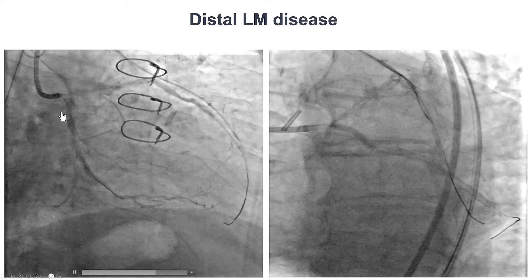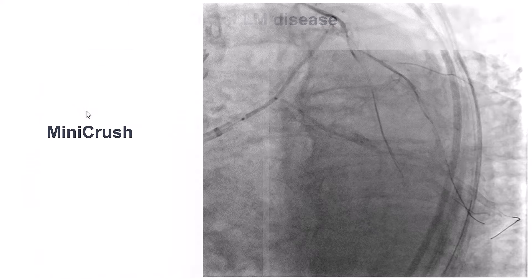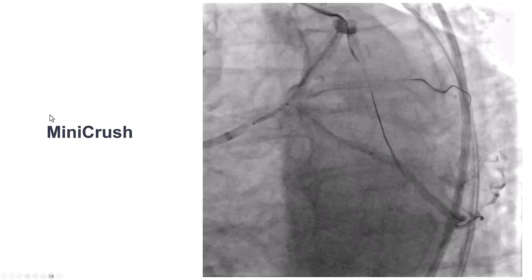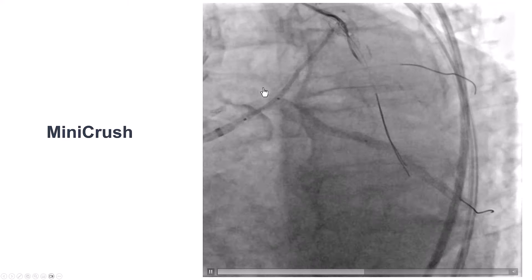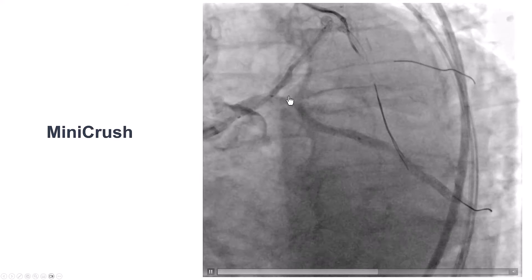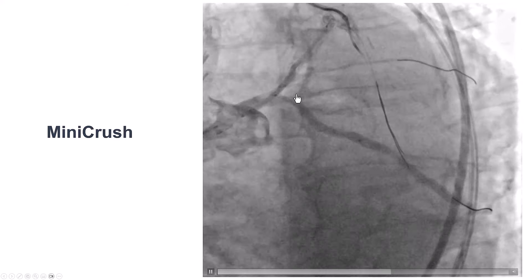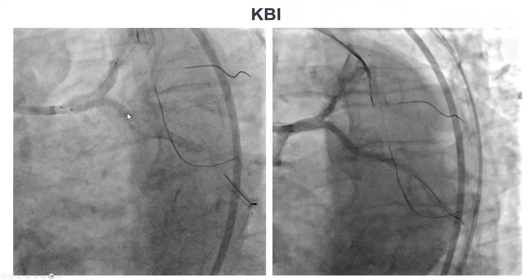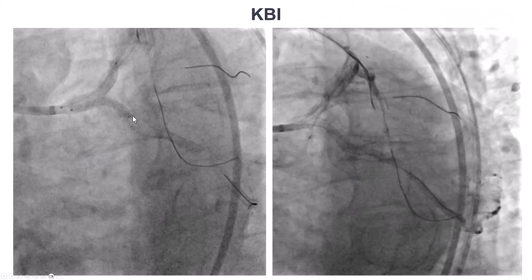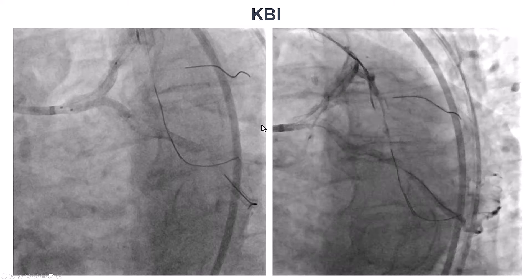There was also significant disease in the left main, LAD, and circumflex. We used a technique we almost never use — a mini-crush — which is also, in a way, a T technique because the angle is very favorable here, essentially almost 90 degrees. We deployed a stent on the side branch, then a stent in the main branch, rewired, and performed kissing balloon inflation, which provided an excellent result.